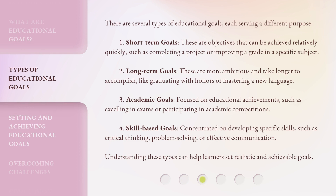There are several types of educational goals, each serving a different purpose. 1. Short-term goals: objectives that can be achieved relatively quickly, such as completing a project or improving a grade in a specific subject. 2. Long-term goals: more ambitious and take longer to accomplish, like graduating with honors or mastering a new language. 3. Academic goals: focused on educational achievements, such as excelling in exams or participating in academic competitions. 4. Skill-based goals: concentrated on developing specific skills, such as critical thinking, problem-solving, or effective communication. Understanding these types can help learners set realistic and achievable goals.